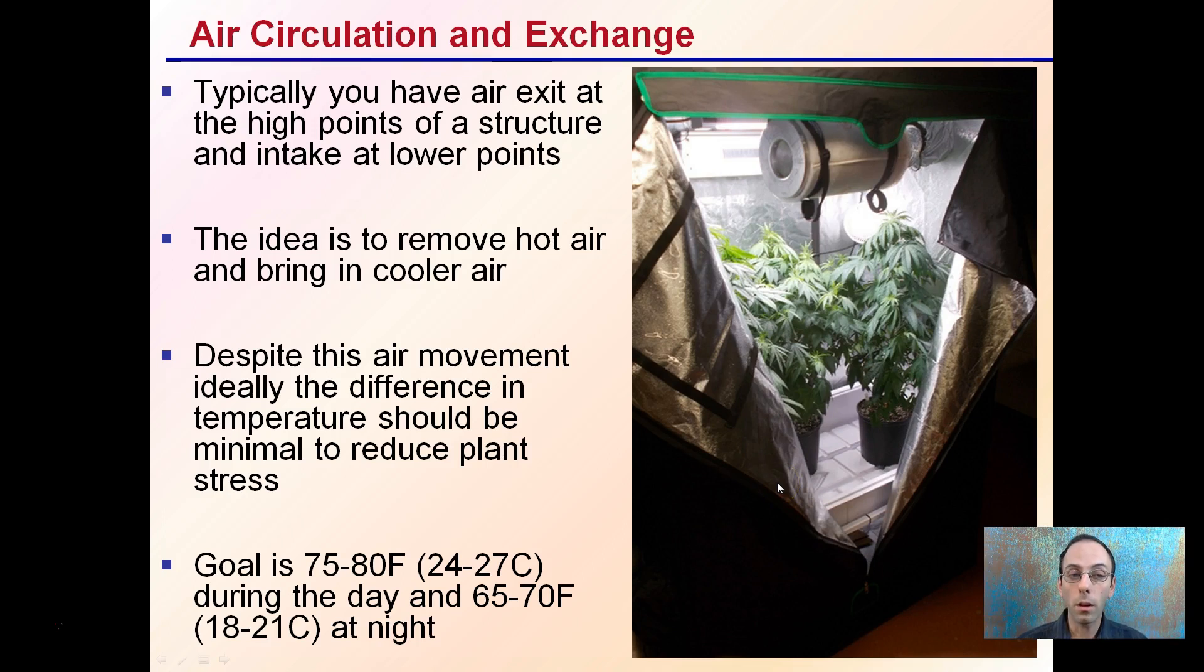Despite air movement, ideally the difference in temperature should be minimal to reduce plant stress. You don't want to be exhausting really hot air and bringing in really cold air, because that makes it very difficult to maintain consistent conditions. The goal is about 75 to 80 degrees Fahrenheit during the day, and you can cool it down to 65 to 70 Fahrenheit at night.